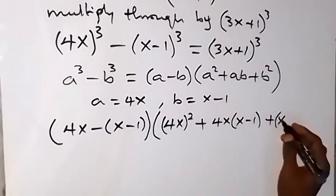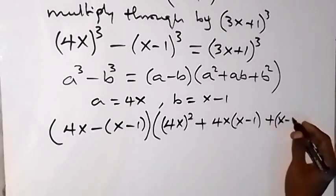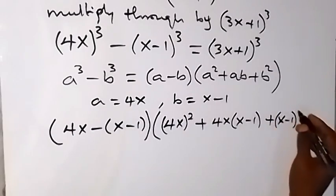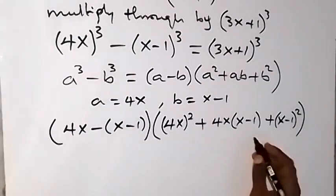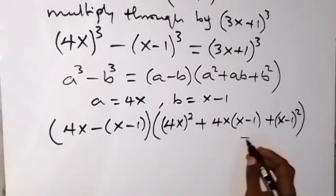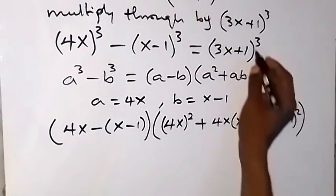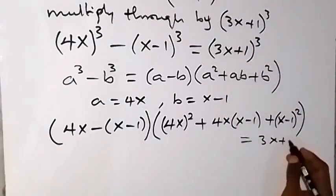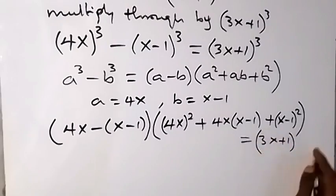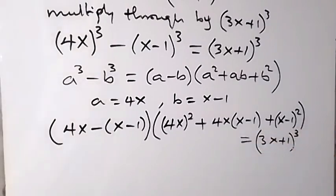Then plus b², which is (x-1)². That is the left-hand side, and we equate it to the right-hand side, which is (3x+1)³.